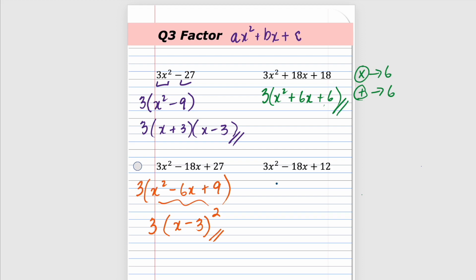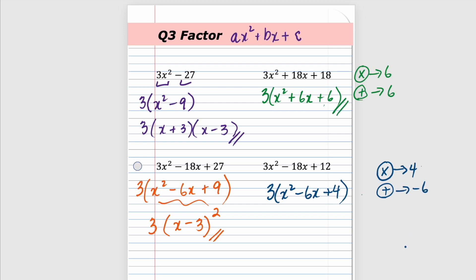The last one in this set: common factor of three gives x² minus 6x plus four. Are we able to factor what's inside? Find two numbers that multiply to four and add up to negative six — no, not possible. So we just stop right there.